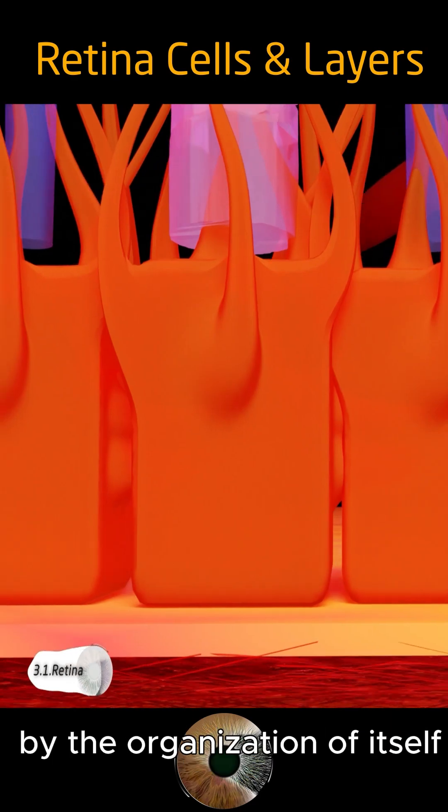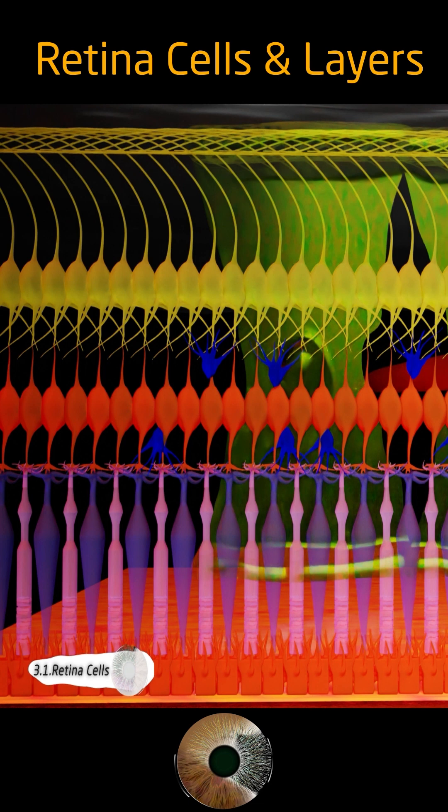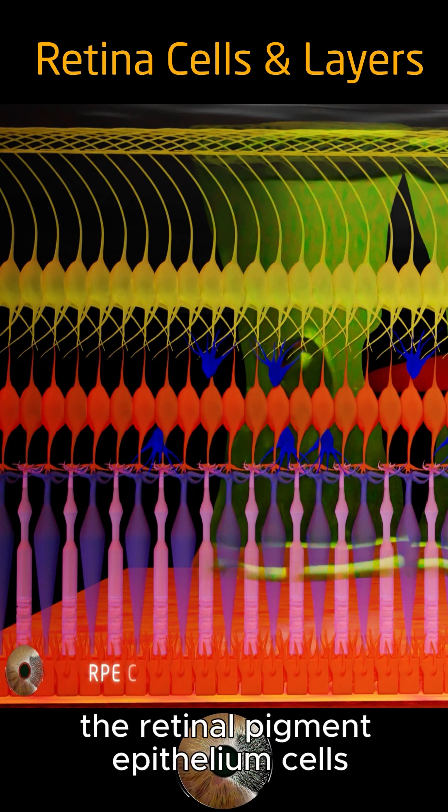The retina consists of 10 layers by the organization of its cells. The retinal pigment epithelium cells.